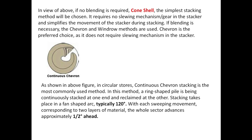Cone shell requires no slewing mechanism and simplifies the movement during stacking. If blending is necessary, chevron and windrow methods are used, with chevron being the preferred choice as it does not require a slewing mechanism. For circular stores, continuous chevron stacking is the most commonly used method. In this method a ring-shaped pile is continuously stacked at one end and reclaimed at the other. Stacking takes place in a fan-shaped arc of typically 120 degrees, with each sweeping movement corresponding to two layers of material, and the whole sector advancing approximately half a degree ahead.